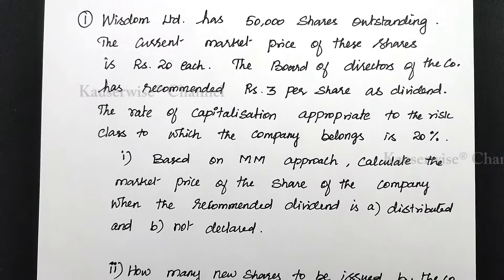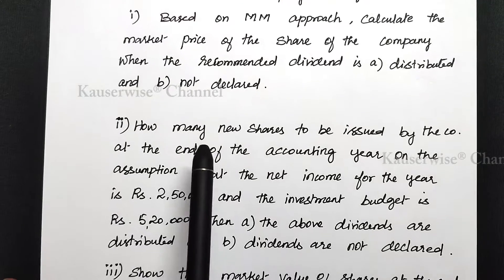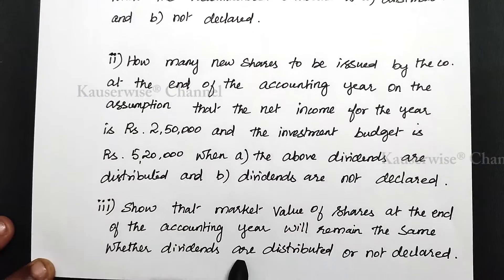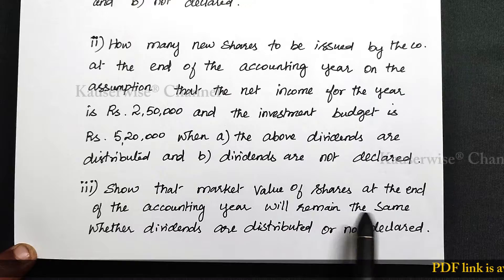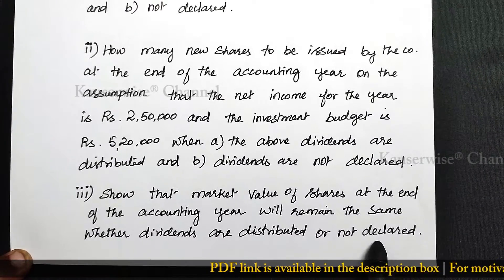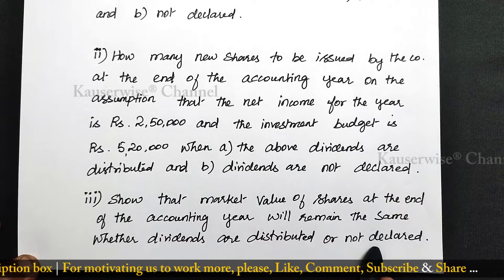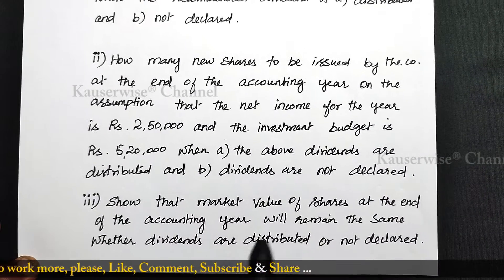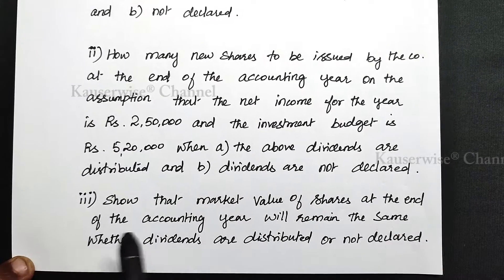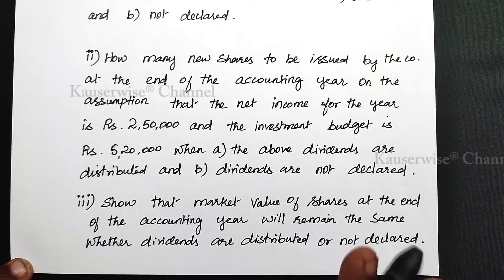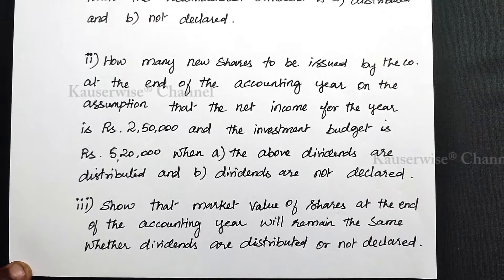So far we have done two calculations: the first is market price per share, and the second is the number of new shares to be issued. The third one is to show that the market value of shares at the end of the accounting year will remain the same whether dividends are distributed or not declared — this is the core concept of the MM approach.